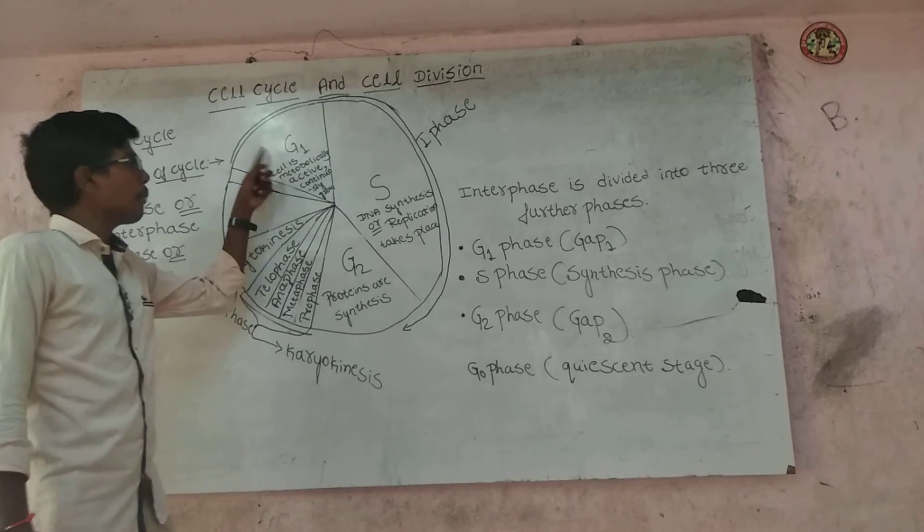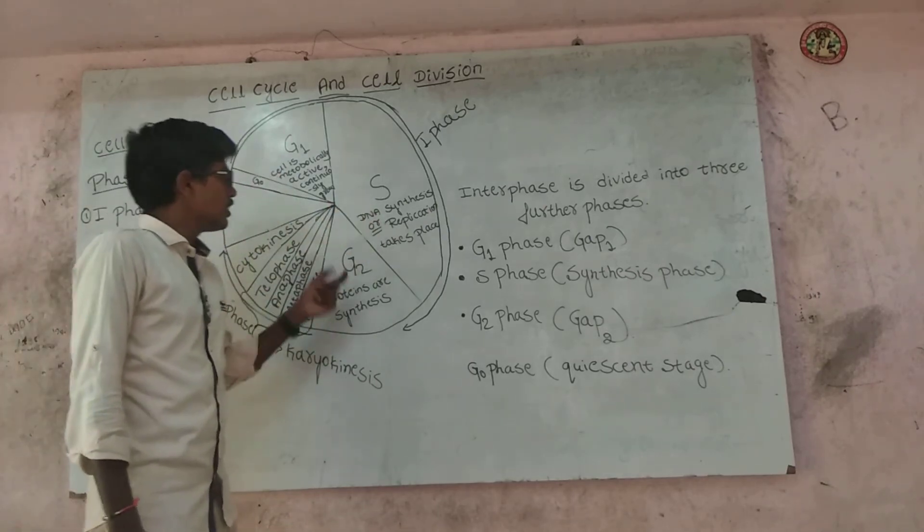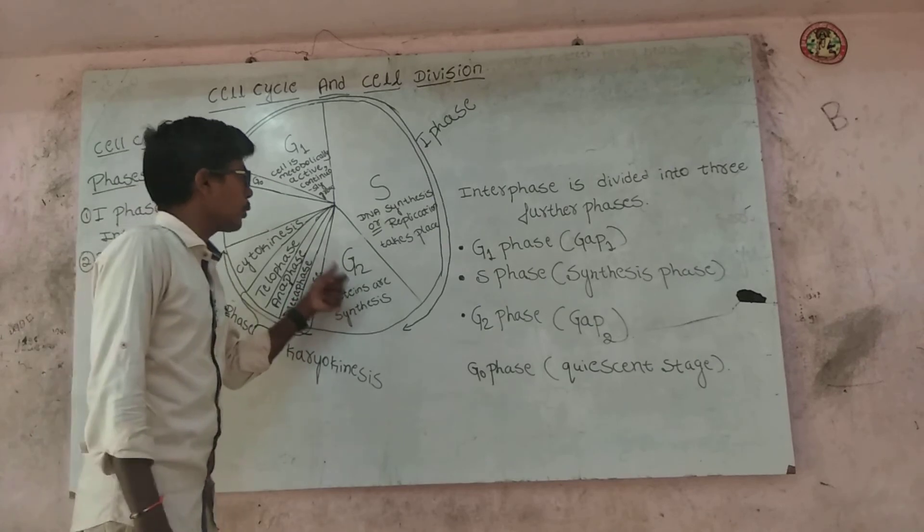G1 phase means gap 1 phase. S phase means synthesis phase. G2 phase means gap 2 phase.